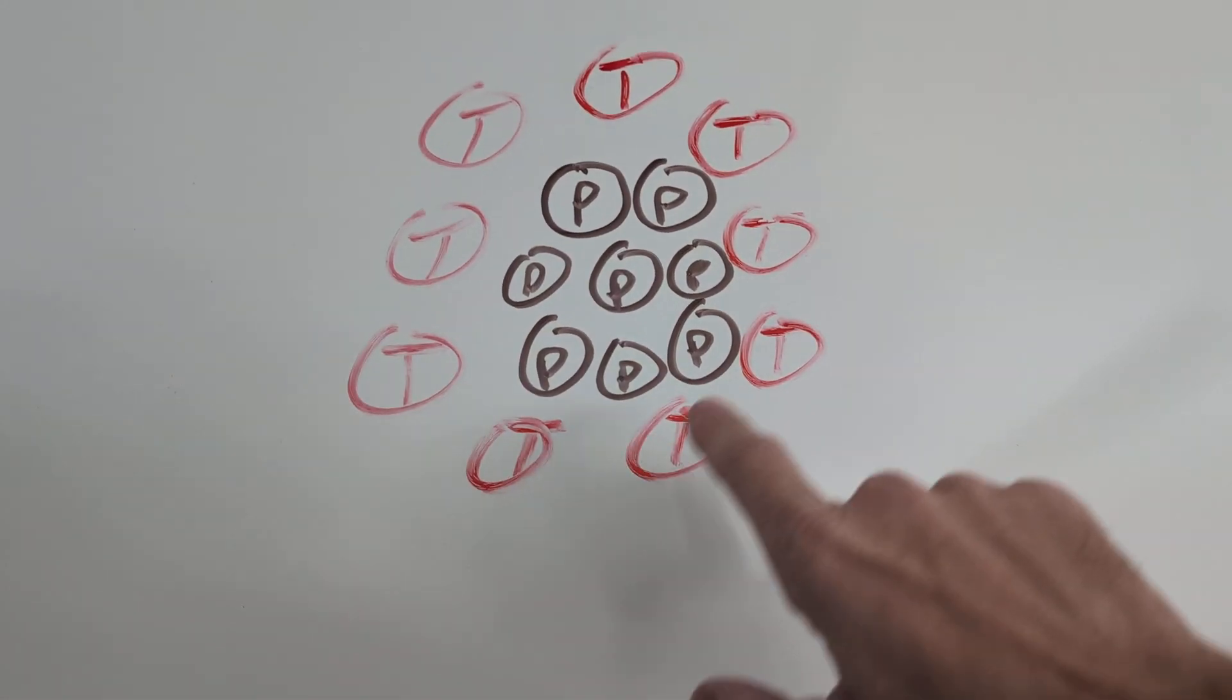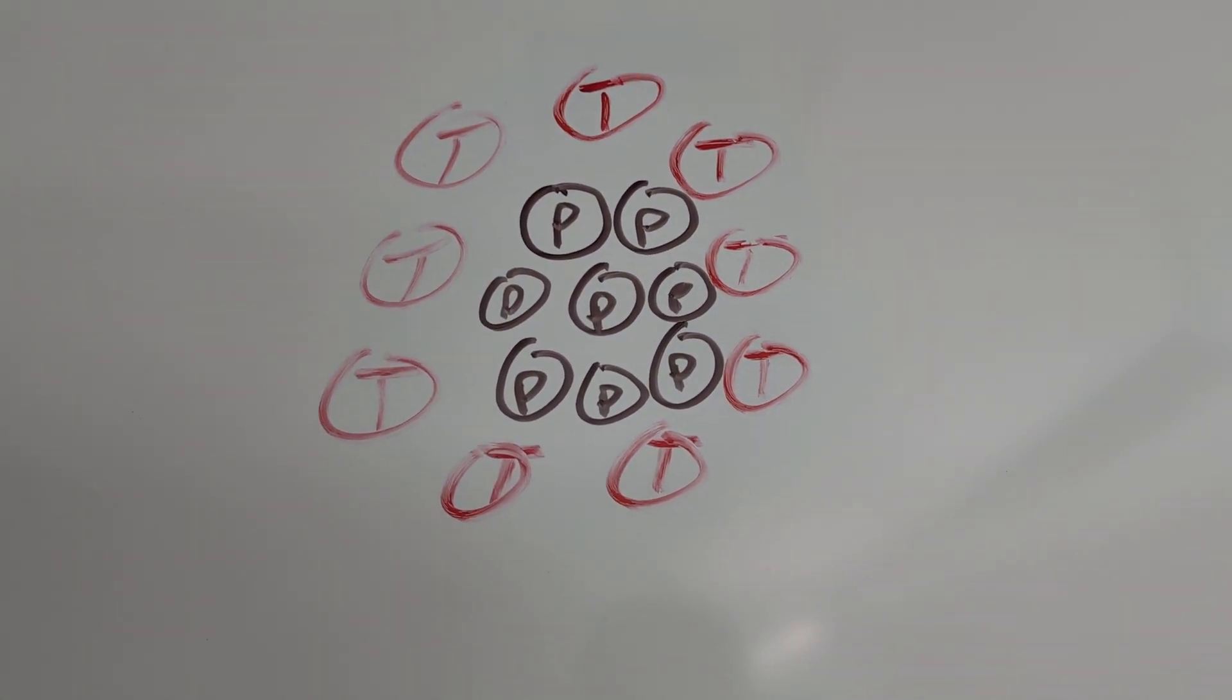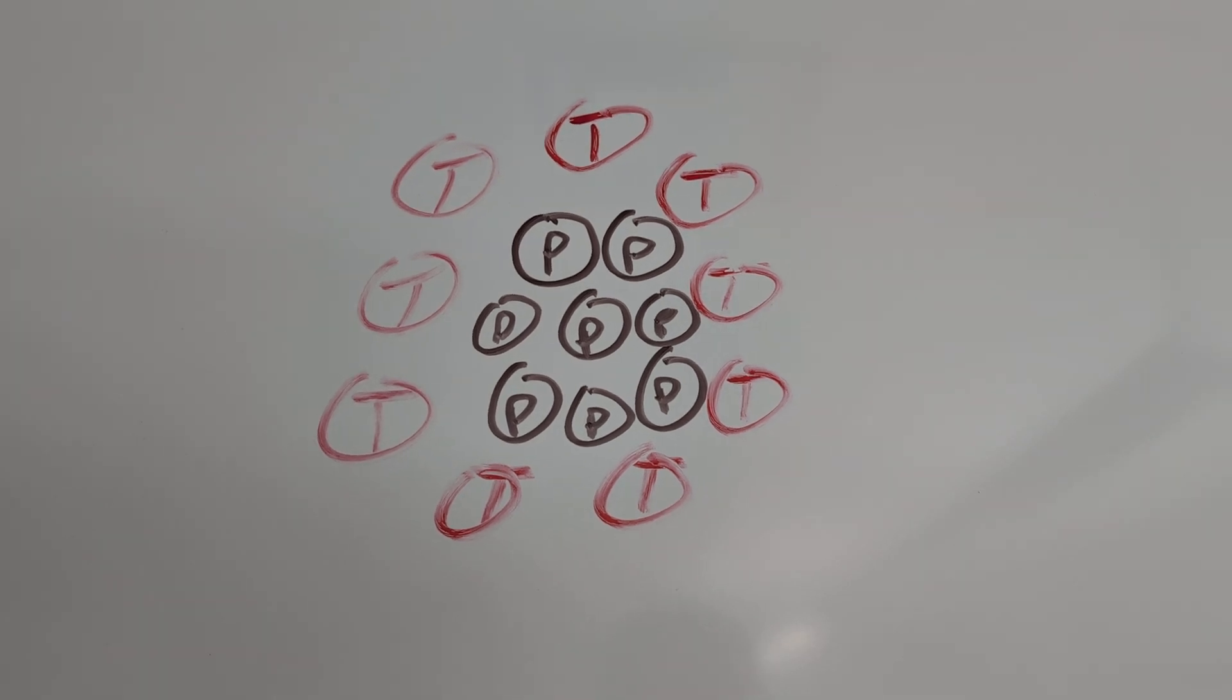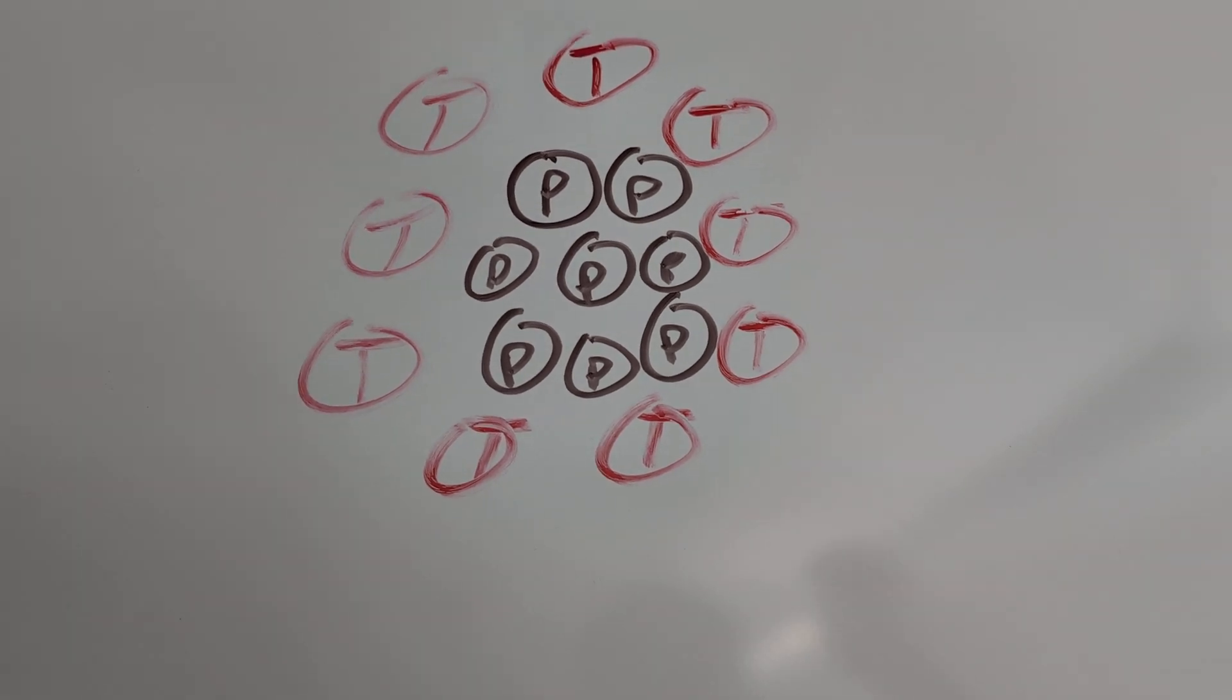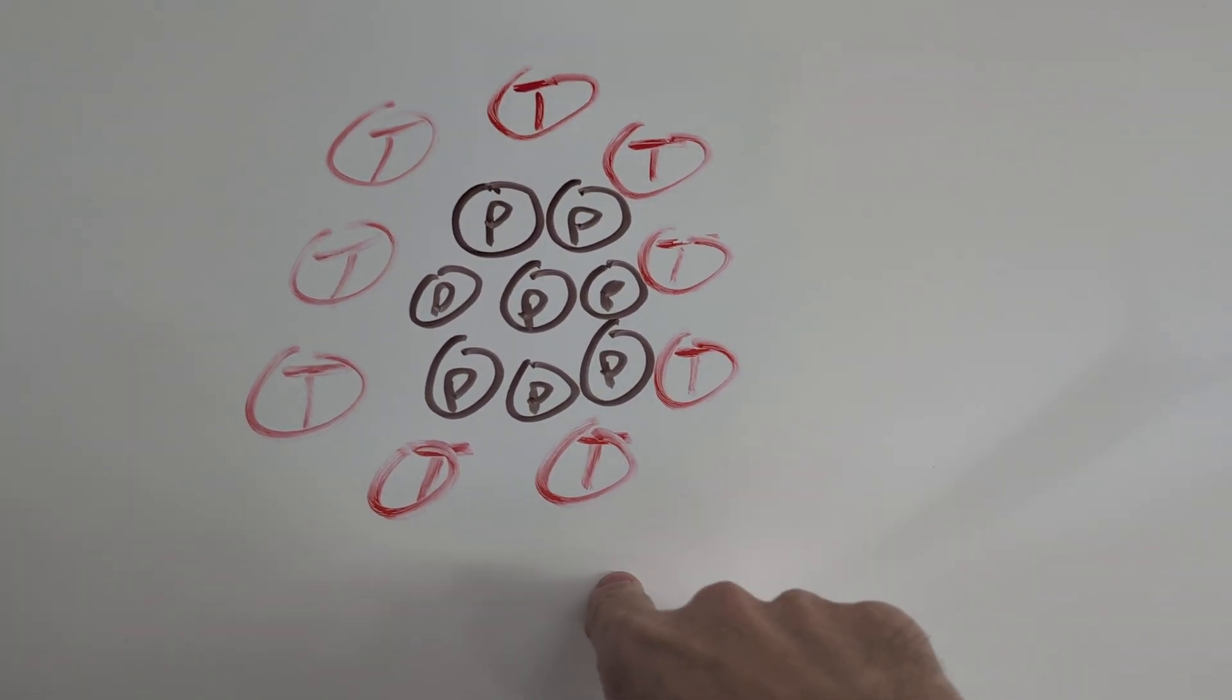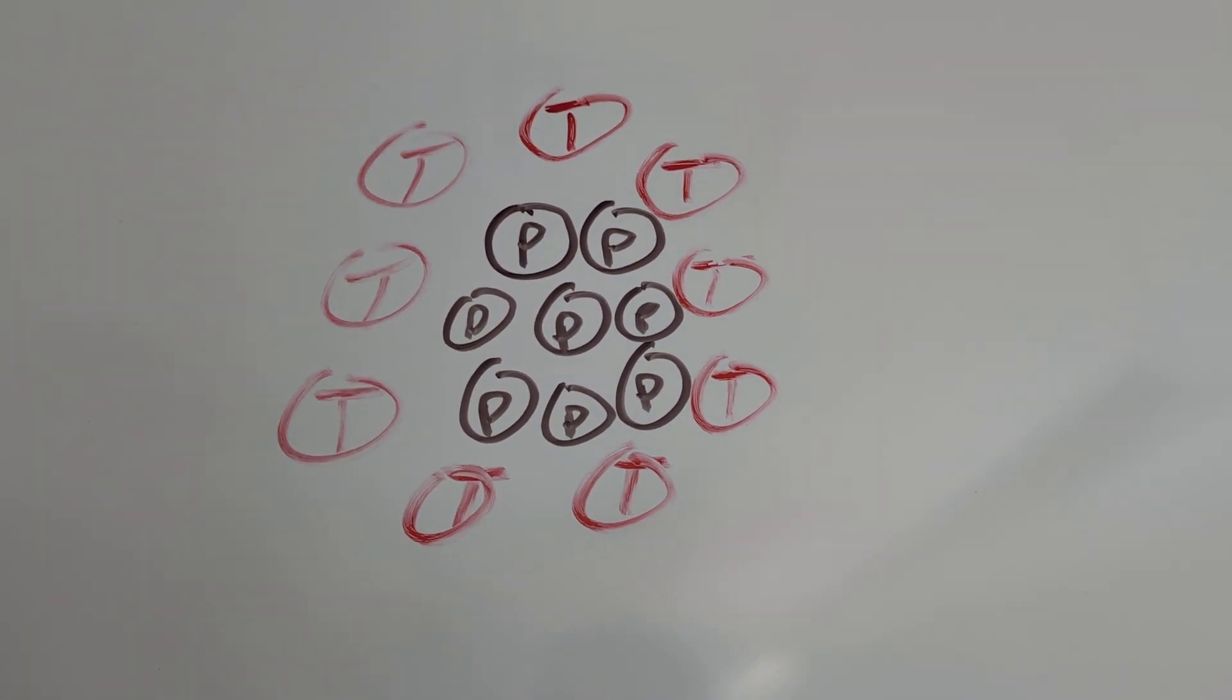You've got these P cells that are the actual pacemaker cells that are firing at whatever their set rate of automaticity is based on neurohormonal integration and interaction. And then they are surrounded by these so-called T cells. And these T cells are what transmit the impulse out into the atria.